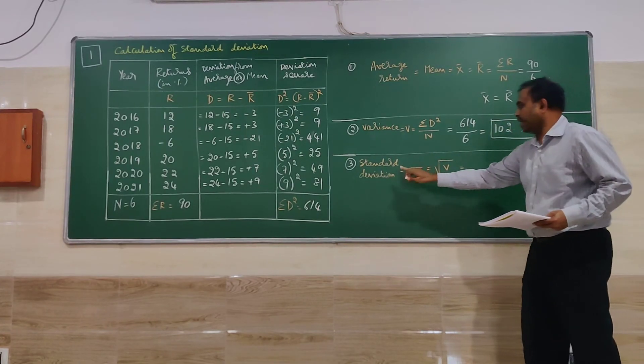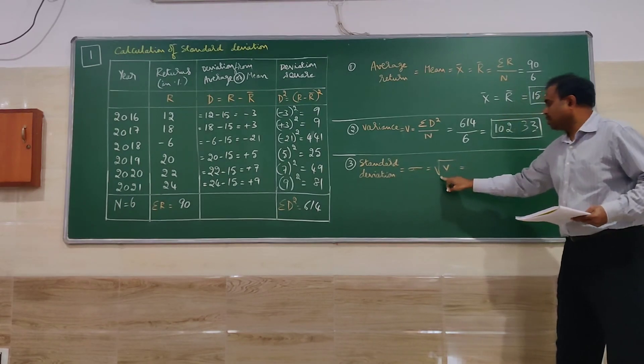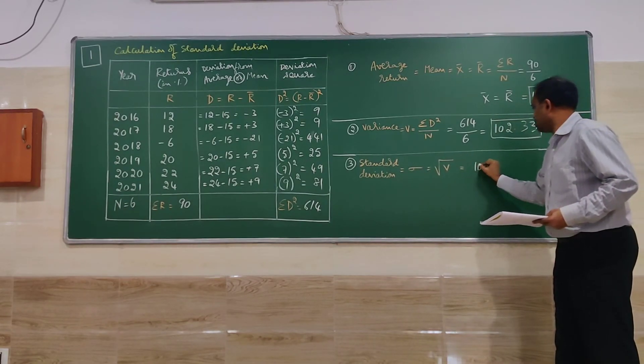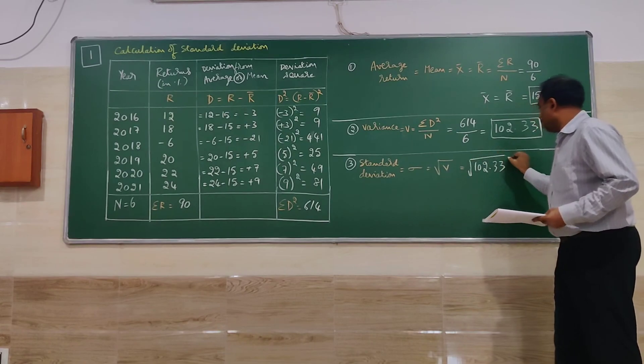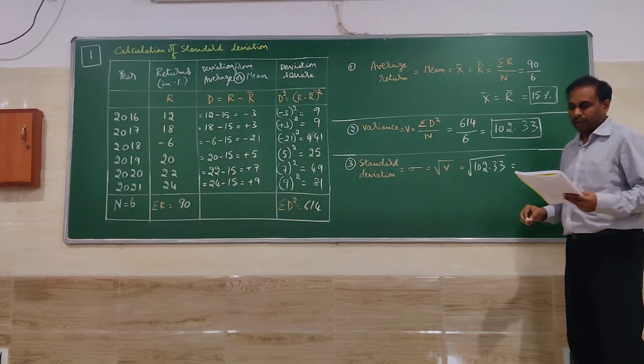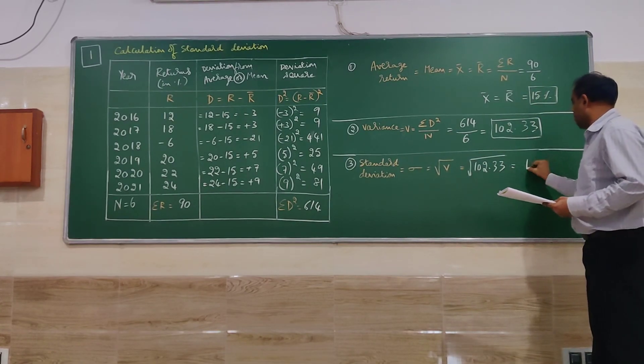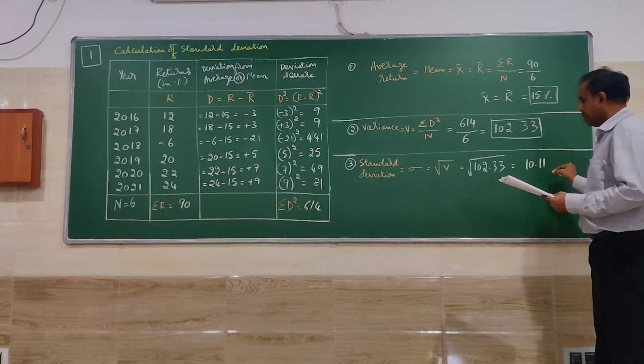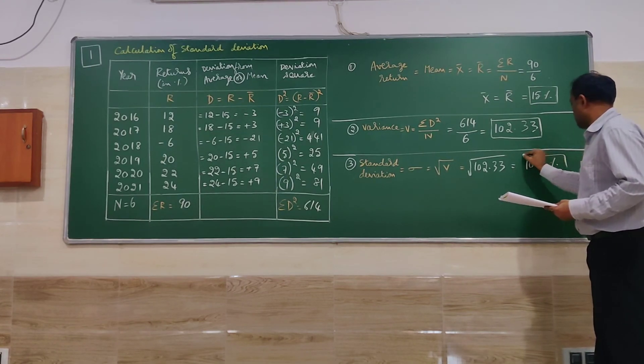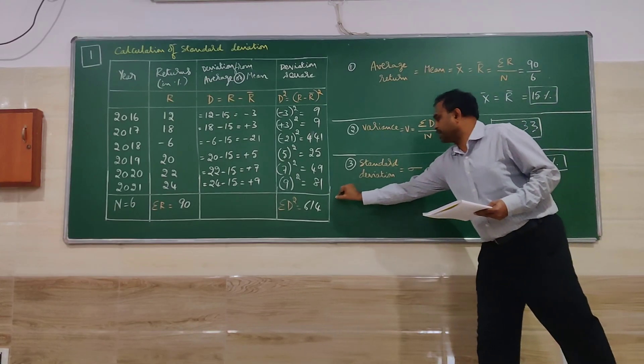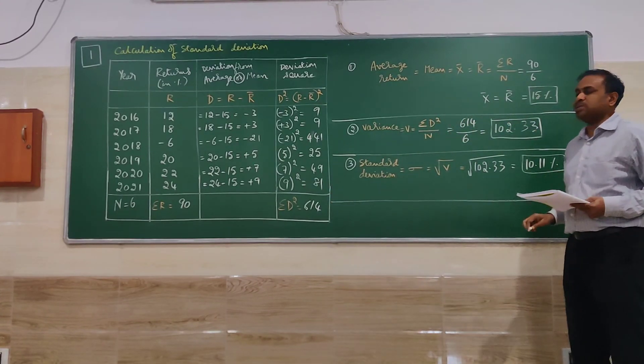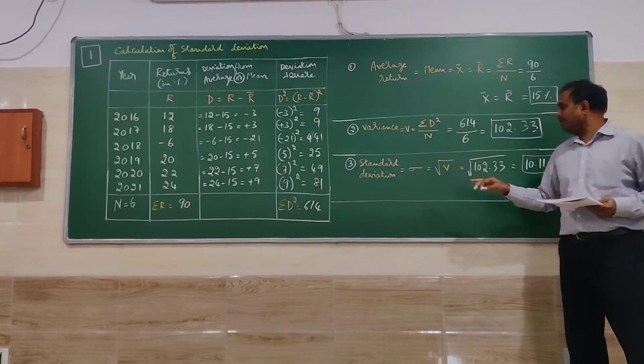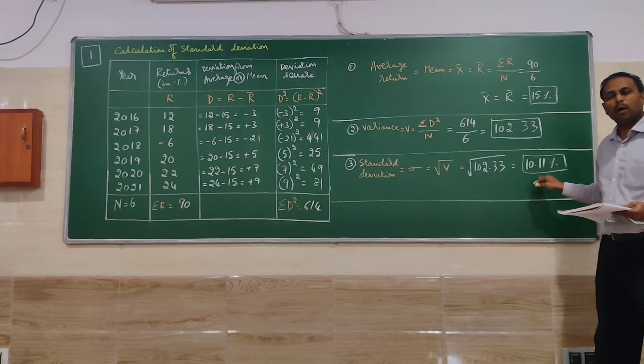So I have to take for standard deviation square root of variance 102.3. Square root we have to take. That is going to give us 10.11 percent as standard deviation. So the risk involving equity share is 10.11.